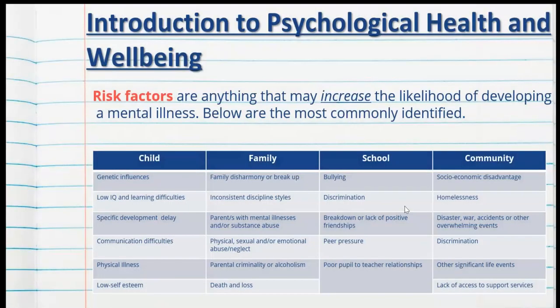It's really necessary to recap risk factors, which are things or factors that may increase the likelihood of developing a mental illness. Below are the most commonly identified — not all of them, but the most commonly identified when this has been studied. They are divided into four categories: child, family, school and community factors. These are all things that can increase the likelihood of someone developing a mental health disorder or make the symptoms worse of a current mental health disorder.